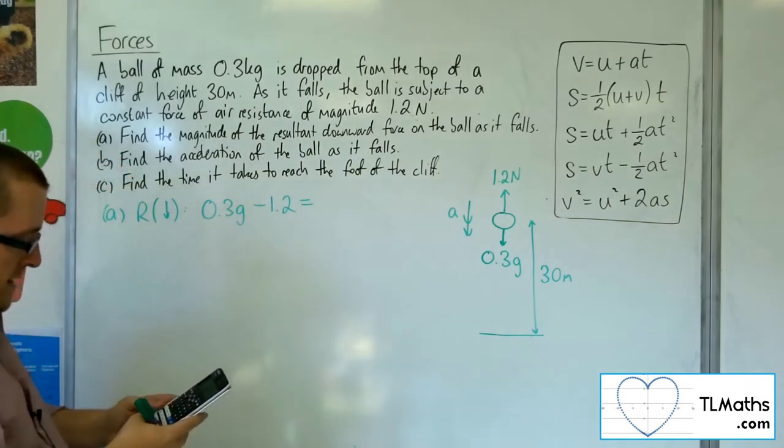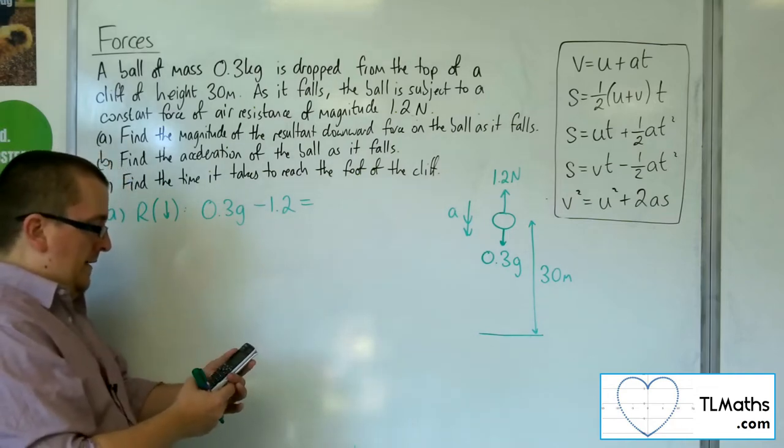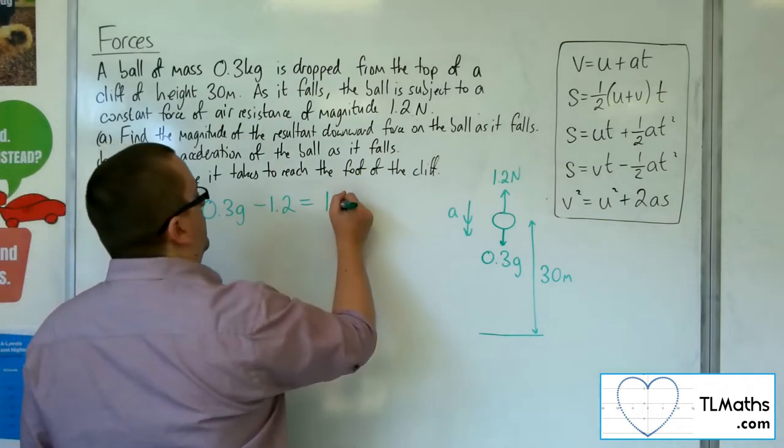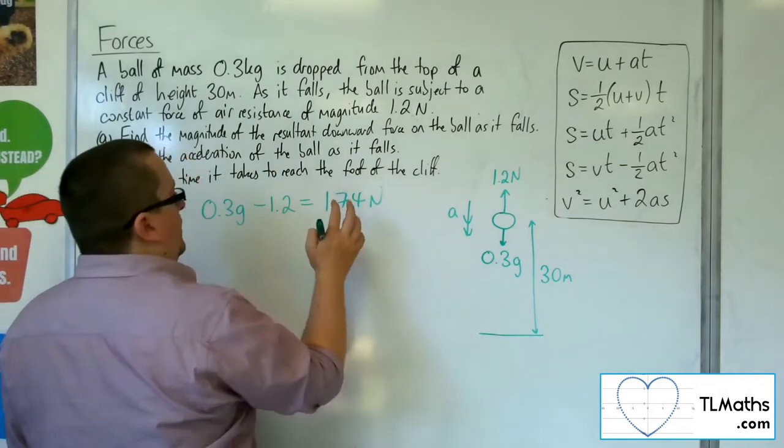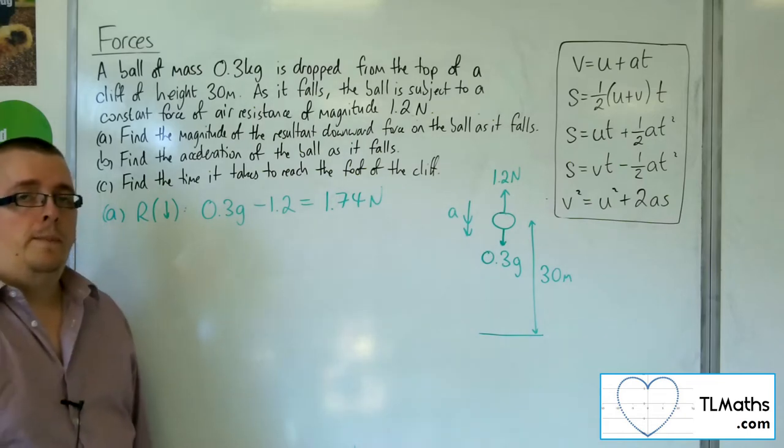So 0.3, and I'm going to use 9.8 as the gravity, take away 1.2, and that gets me 1.74 newtons. So that is the magnitude of the resultant downward force on the ball as it falls.